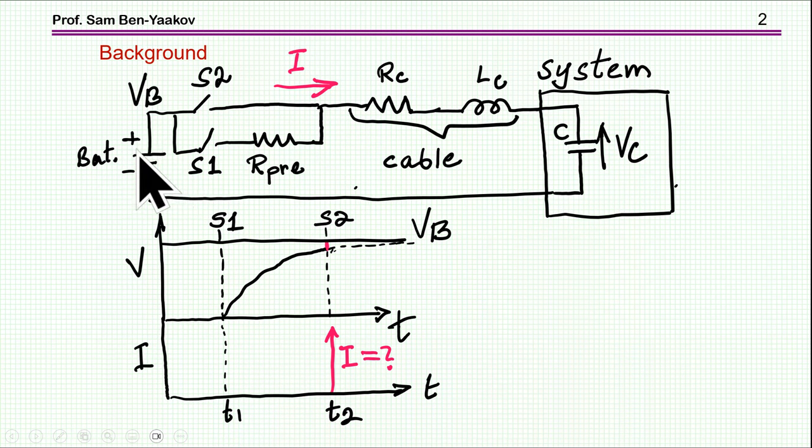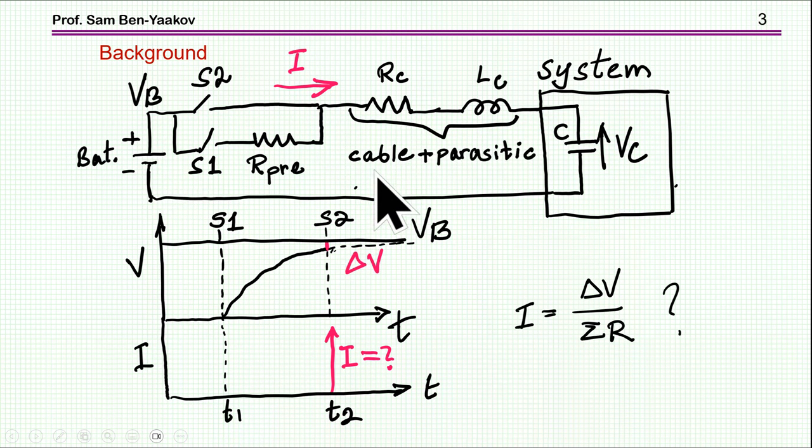The resistance represents the cable plus the internal resistance of the capacitor and the battery—the total resistance in this circuit. This is the total inductance. The intuitive feeling is that the current will be like the voltage difference divided by the resistance: delta V over delta R.